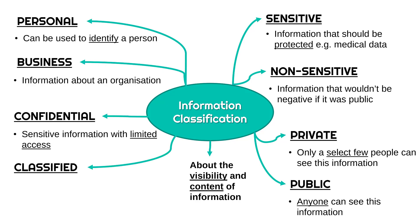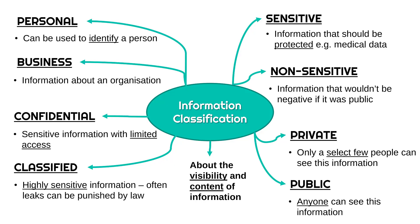Classified information is the next step up — here you can often be punished by law. Classified information is usually only found in military and government contexts. It is especially sensitive, so if it gets leaked or seen by someone who shouldn't have access, it might have a really serious consequence for lots of people. Confidential can be used in different businesses, but classified is usually a government-only term.